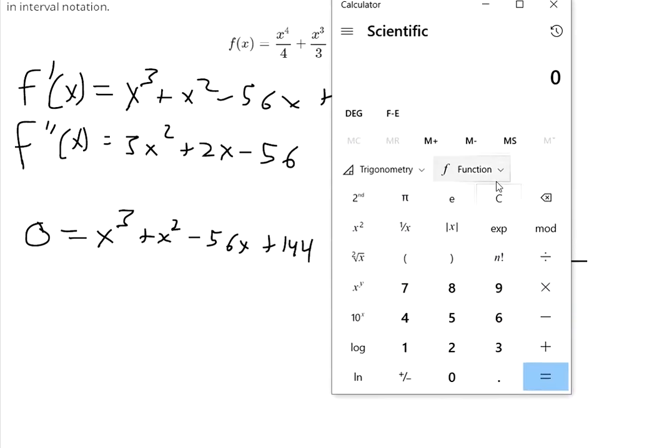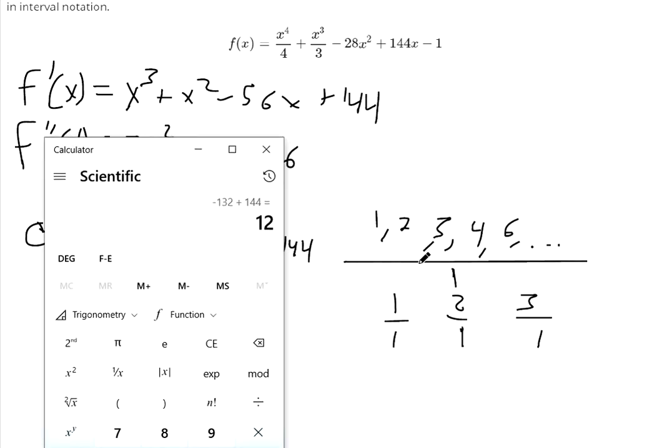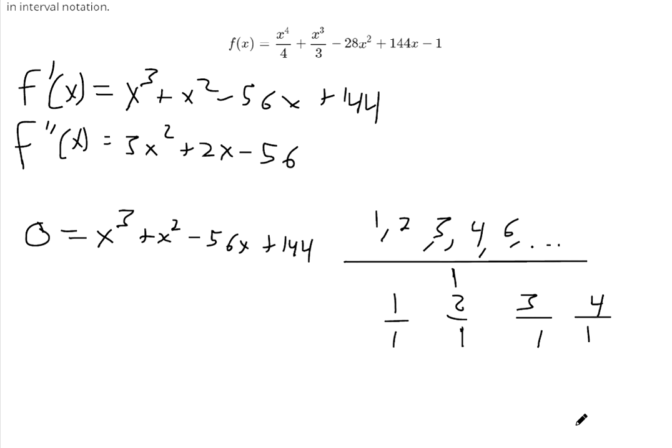Let's try x equals 3. So 3³ + 3², we get 36. 56 times 3, that's negative, plus that 36, plus the 144. Getting closer, so maybe 4 will be the first root that we have.